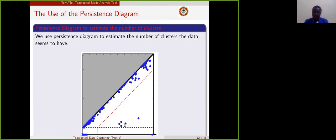That means that in this case, we have 1, 2, 3, 4, 5, 6 clusters. So we use the persistence diagram to estimate the number of clusters the data seems to have.